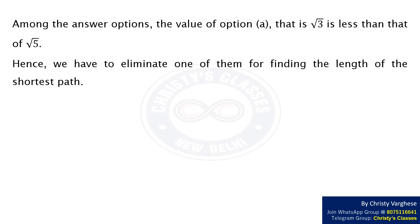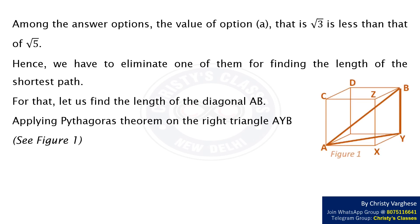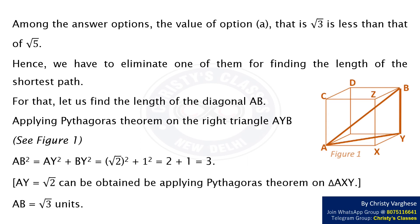Applying Pythagoras theorem on the right triangle AYB we get AB² = AY² + BY² which equals (√2)² + 1², that is 2 + 1 which equals 3. Thus we get AB = √3 units.